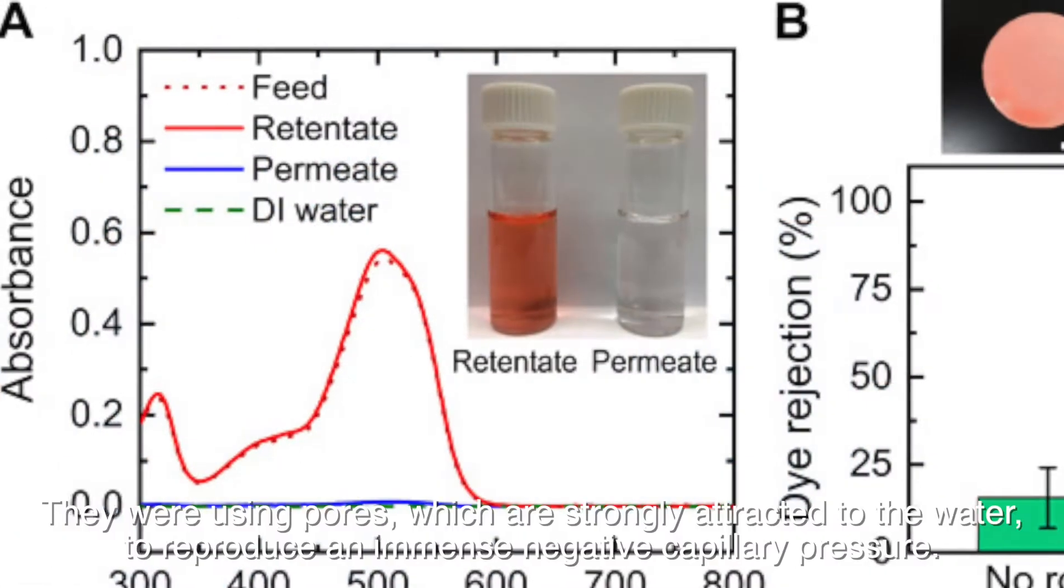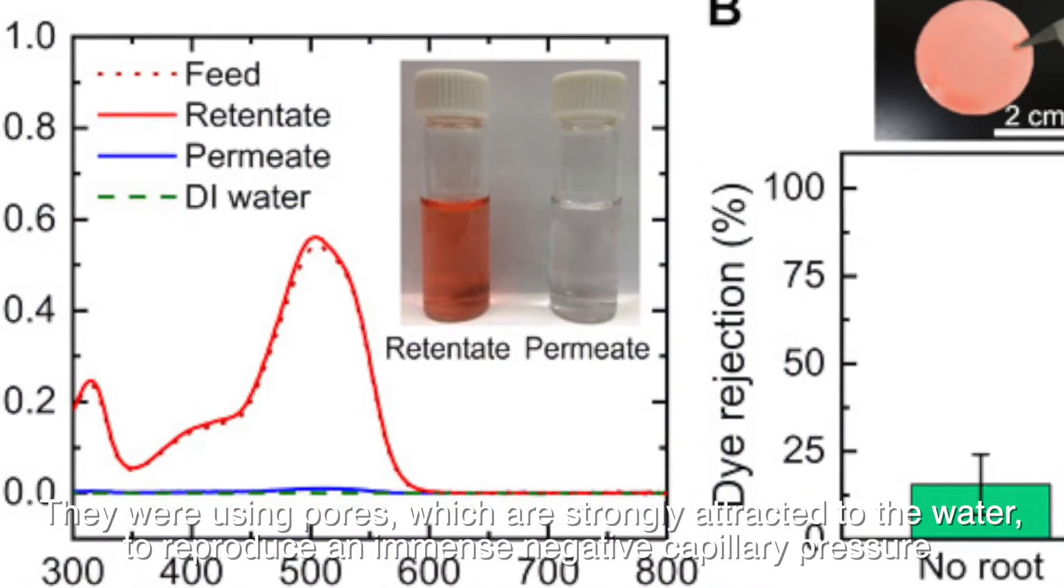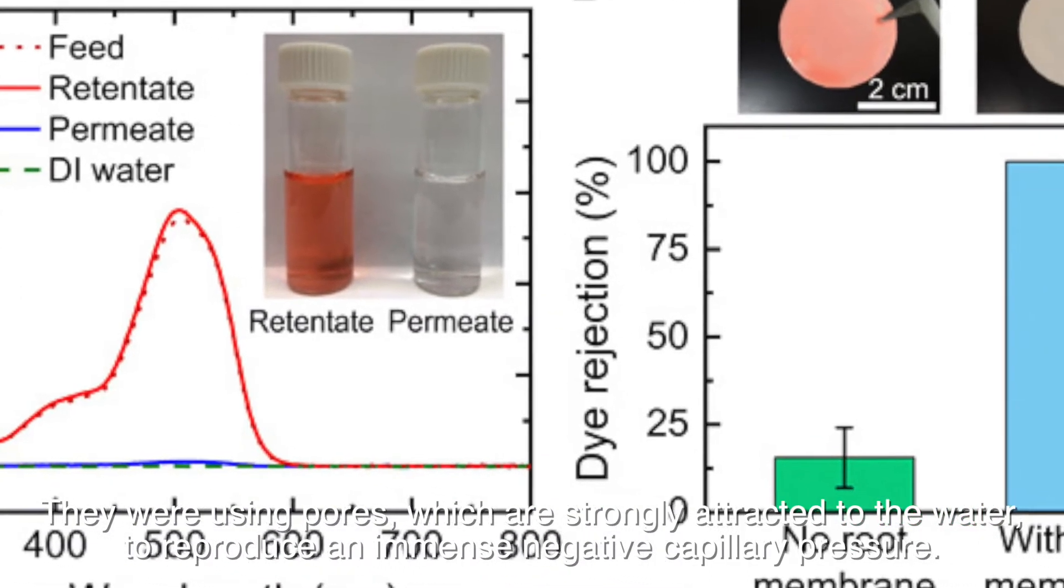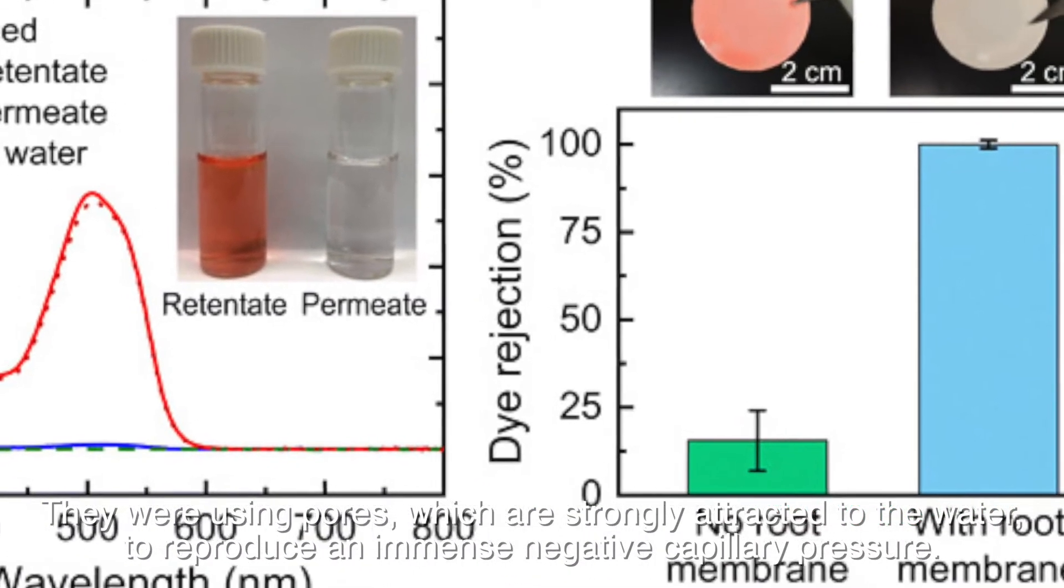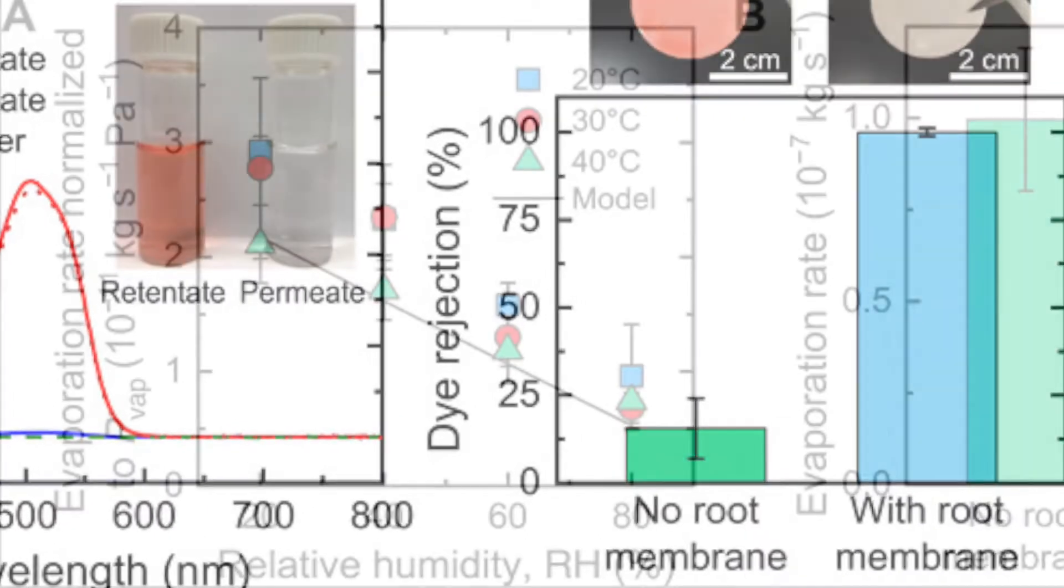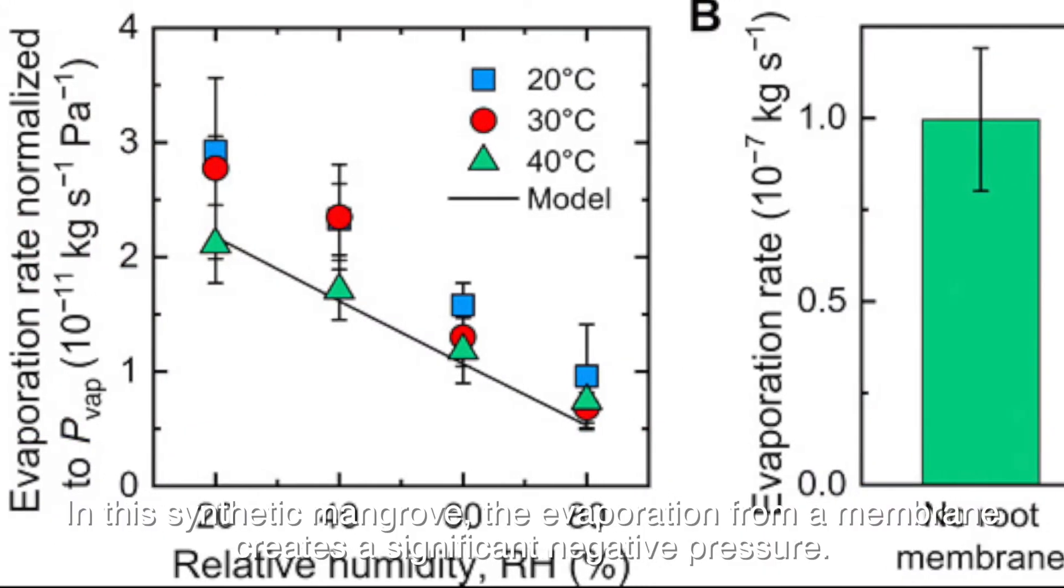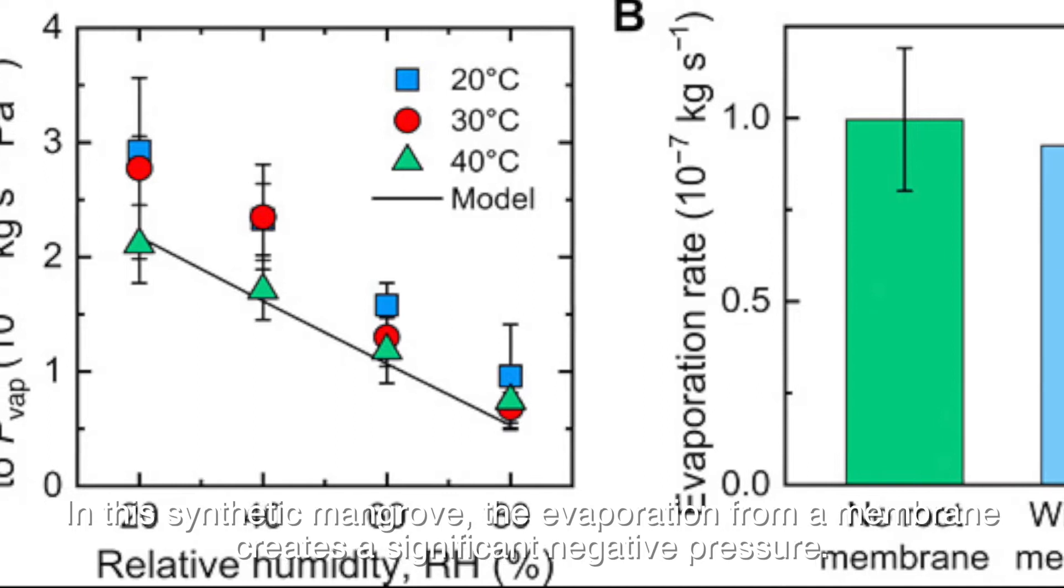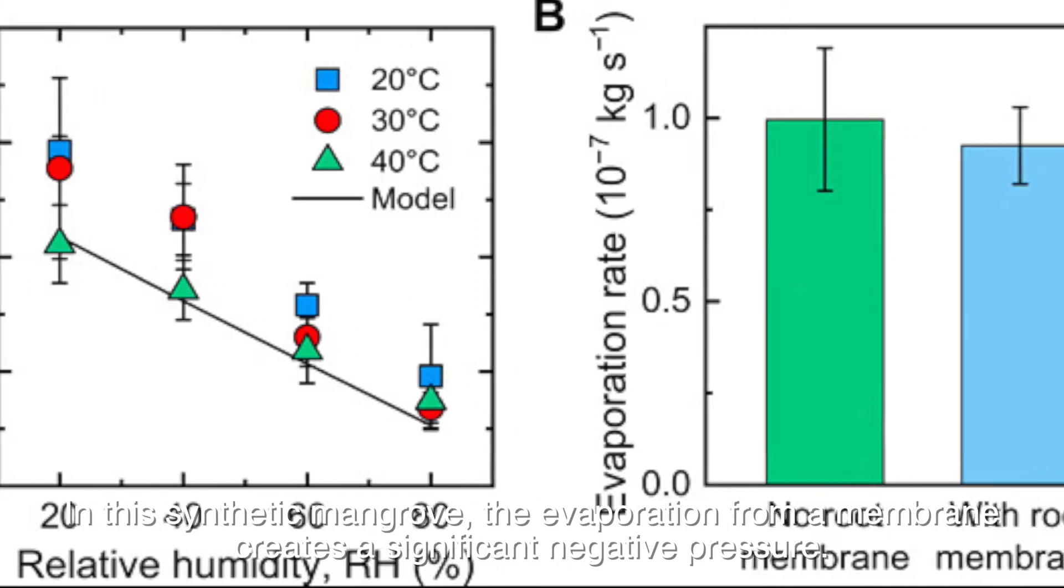They were using pores which are strongly attracted to water to reproduce an immense negative capillary pressure. In this synthetic mangrove, the evaporation from a membrane creates a significant negative pressure.